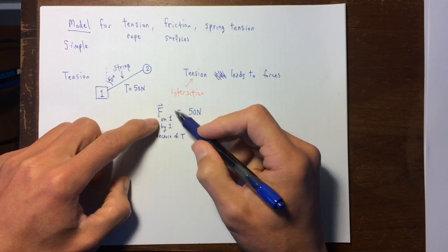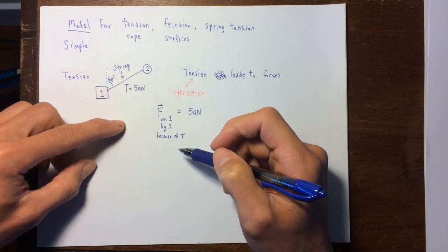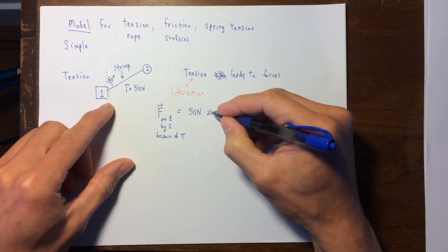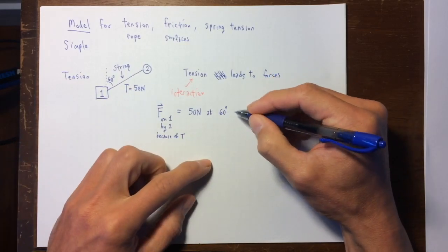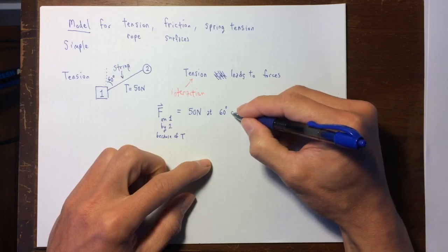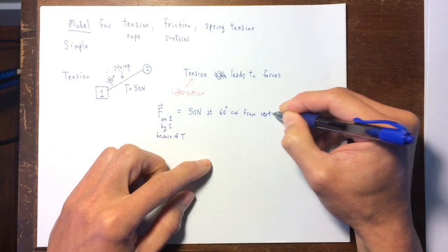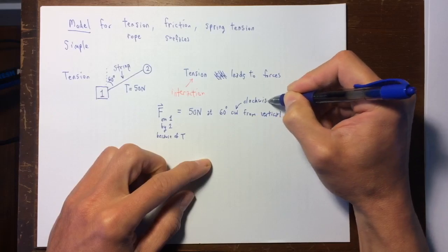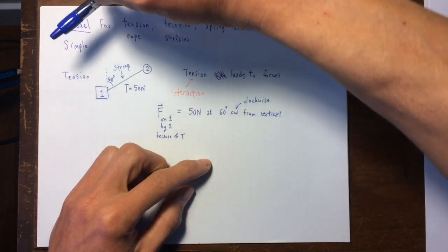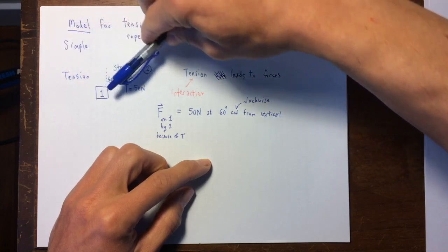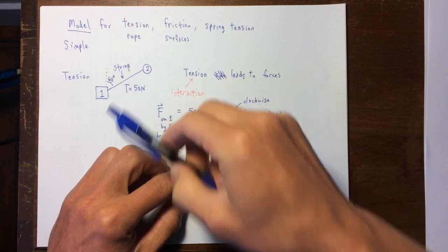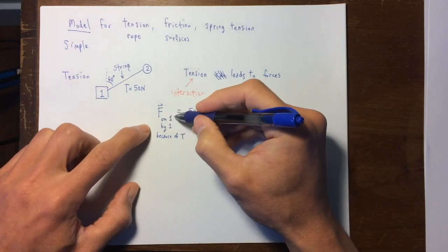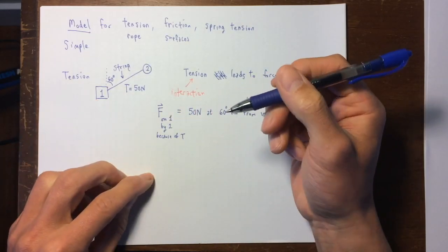So the force direction, force is a vector, it acts along the direction of the string. This is how you model the force vector, so it's 50 Newtons at 60 degrees, let's say, clockwise from vertical. So this right here, clockwise, that's the direction that the second hand moves, and all the hands on a clock move. So we sweep 60 degrees clockwise from vertical, and that's the direction of the force acting upon object number one by object number two because of the tension.